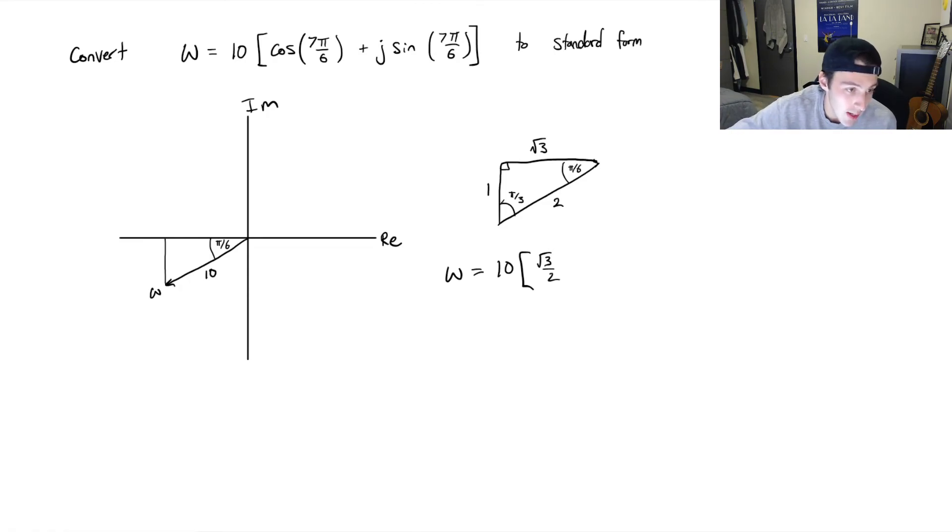So we get w equals 10 times... Well, cosine of this special triangle is adjacent over hypotenuse. That's √3 over 2. And remember, this is going to be negative √3 over 2 because we are in the negative direction of the real axis. We are also going to be negative in this quadrant because we're going down. You could also just get this from CAST rule. So negative, and this is opposite over hypotenuse. This is half j. And now we'll just distribute the 10 in. So that's going to be -5√3 - 5j. And this is the final answer for w in standard form.